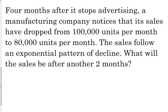So we drop from 100,000 to 80,000. So 100,000 is our initial, that's what we started with, that's the T of zero. The 80,000 is four months after it stopped advertising, so that's T equals four.